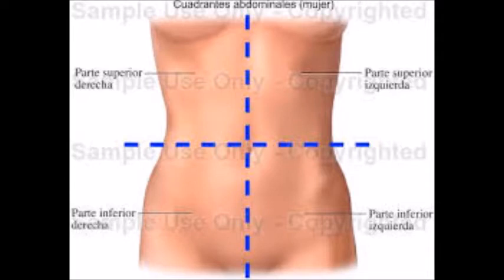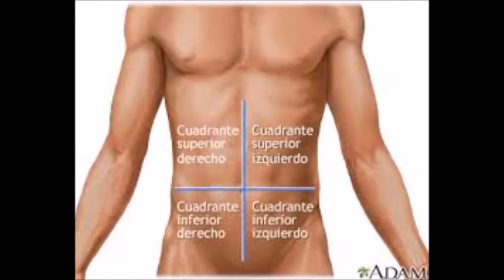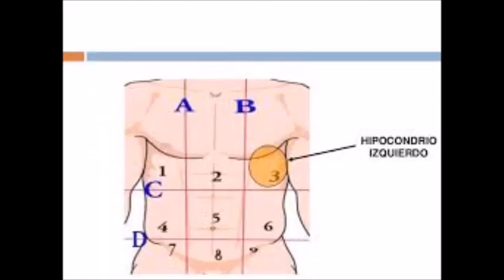The abdominal wall has filled anatomical landmarks. The flat abdominal wall is defined with the muscles. The abdominal plan is divided using the costal margins, the superior anterior iliac spines, and the navel. The most common system to identify regions of the abdomen is the division into four quadrants, using vertical and horizontal lines through the navel, forming two upper quadrants and two lower right and left quadrants.